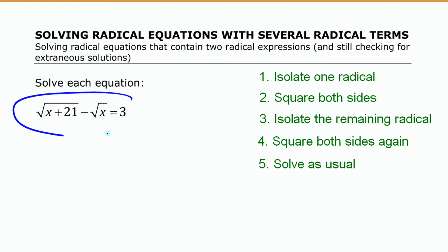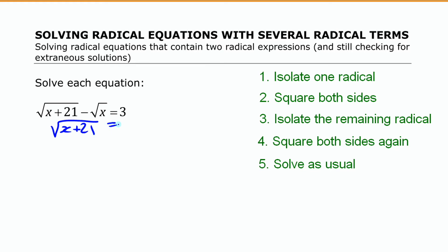For this equation there are two radical terms. I'm going to isolate the one on the left by moving the other to the other side, so it becomes: square root of x plus 21 equals square root of x plus 3. I'm going to square both sides. Squaring the left side gives just x plus 21, because the square root squared is just the thing itself. On the other side I have to square the whole binomial.